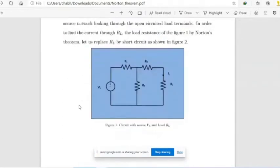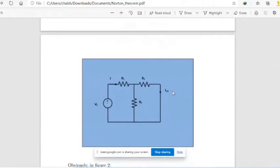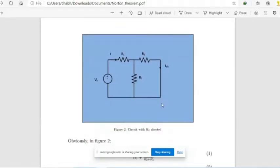In our case here in figure 1, we need to find load current IL across some load resistance RL. Now in order to do so, first thing which we will do is we will replace load resistance with short circuit current and find short circuit current across it. As shown here in figure 2, this ISC is short circuit current.